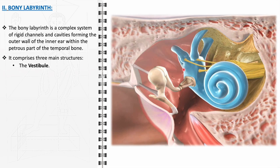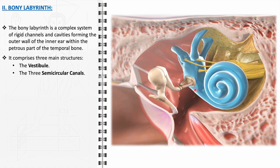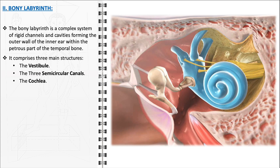The second key structure of the bony labyrinth is the three semicircular canals. These canals are positioned at right angles to each other and are named according to their orientation: the lateral, superior, and posterior semicircular canals. Lastly, the cochlea is a spiral-shaped cavity resembling a snail shell. It is the hearing organ of the inner ear, where sound vibrations are transformed into neural signals.